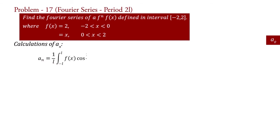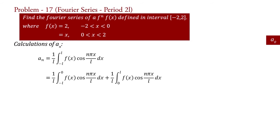Now for an: an equal to 1 upon L integral minus L to L f(x) cos(n pi x upon L) dx. Since f(x) is divided into two parts, we will write an equal to 1 upon L integral minus L to 0 f(x) cos(n pi x upon L) dx plus 1 upon L integral 0 to L f(x) cos(n pi x upon L) dx. Putting the values of f(x) and L: an equal to 1 upon 2 integral minus 2 to 0 of 2 cos(n pi x upon 2) dx plus 1 upon 2 integral 0 to 2 of x cos(n pi x upon 2) dx. The two's cancel.